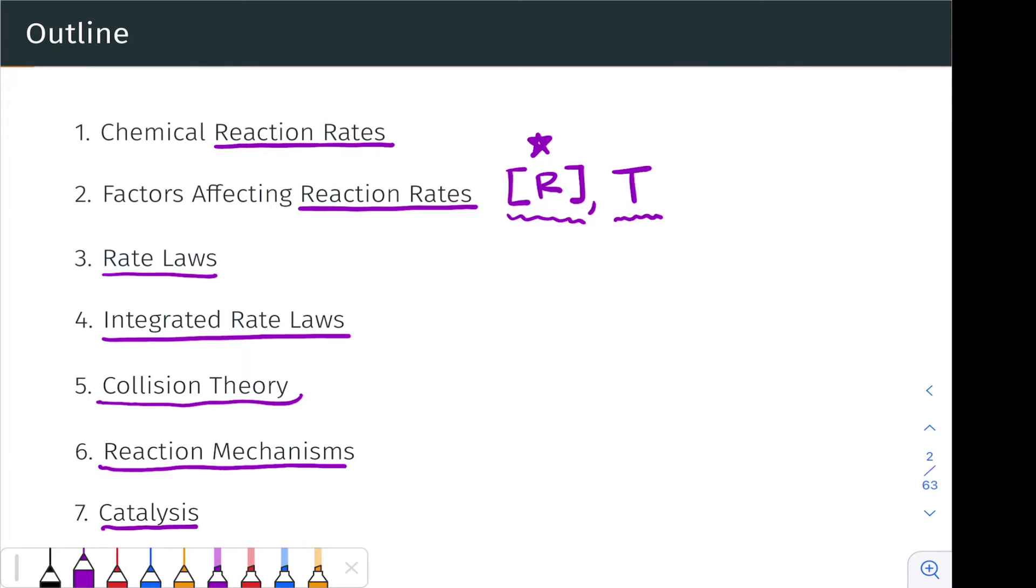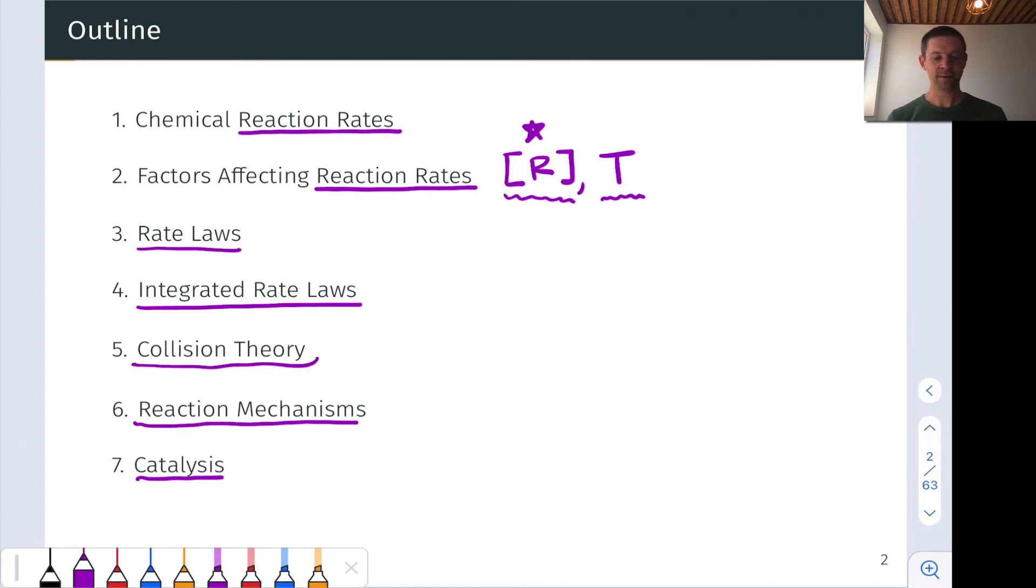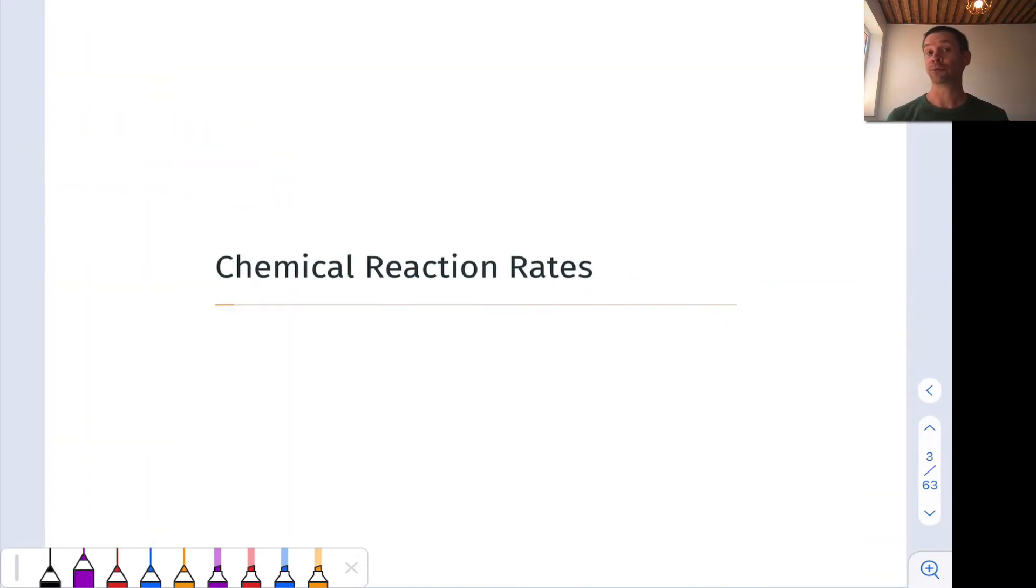This is a very exciting and very active area of current research because accelerating chemical reactions obviously gives us access to valuable products in a relatively short timeframe. So let's begin by defining what we mean by the chemical reaction rate and look at the various places where chemical reaction rate pops up.